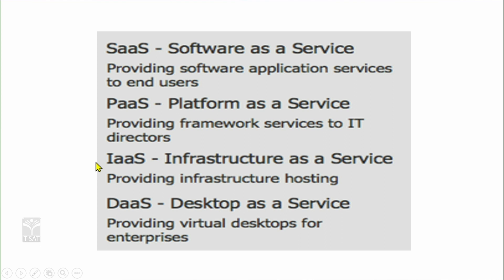To make cloud computing happen, we require certain arrangements. Software as a service — there must be software in your system like Windows, Android, or iOS. Infrastructure as a service — you need infrastructure like signal towers and modems. Apart from this, you need hardware like cell phones and laptops. Without this arrangement of hardware and software, cloud computing is not possible.